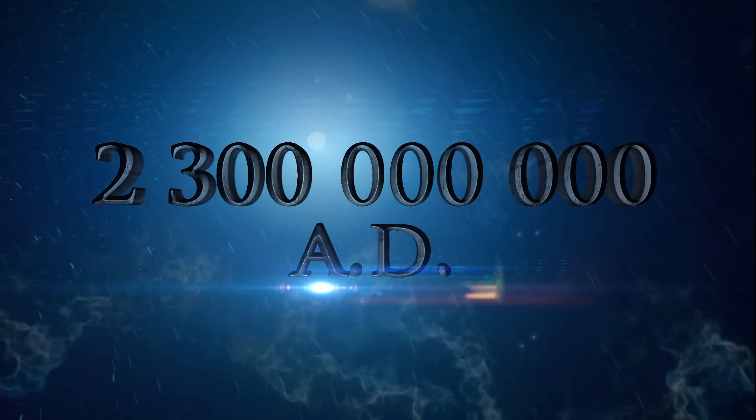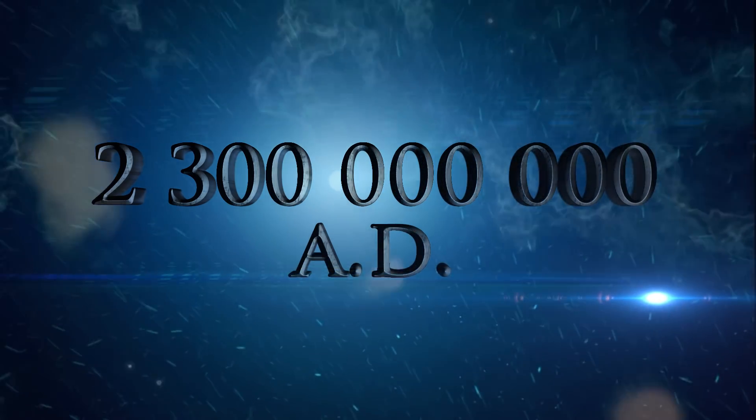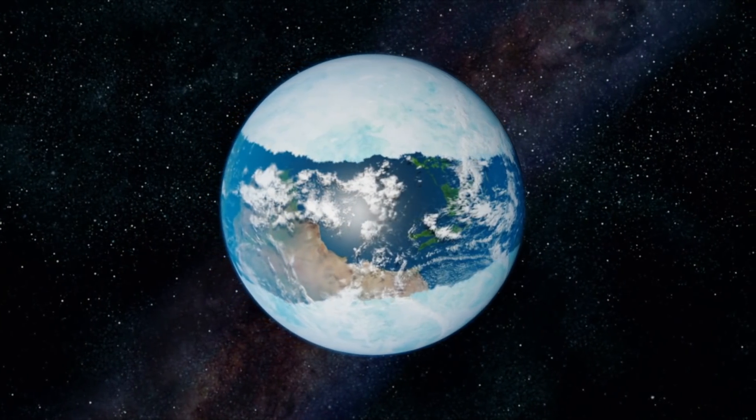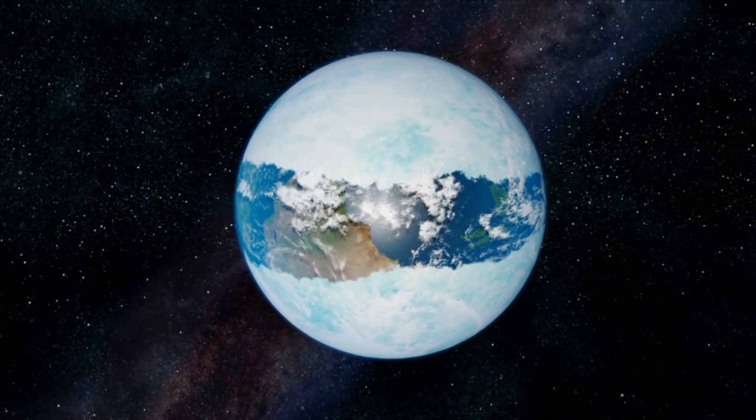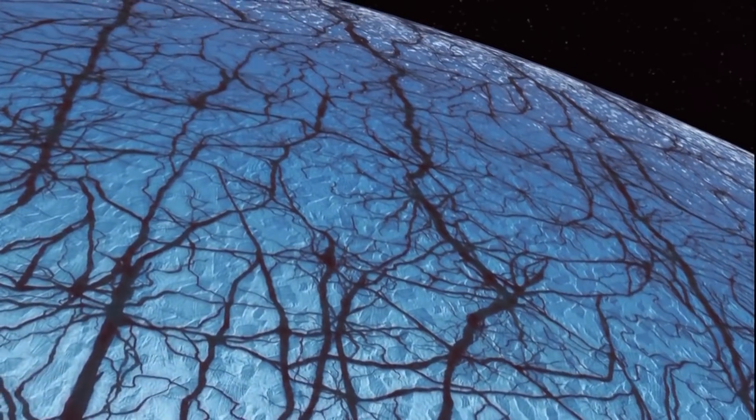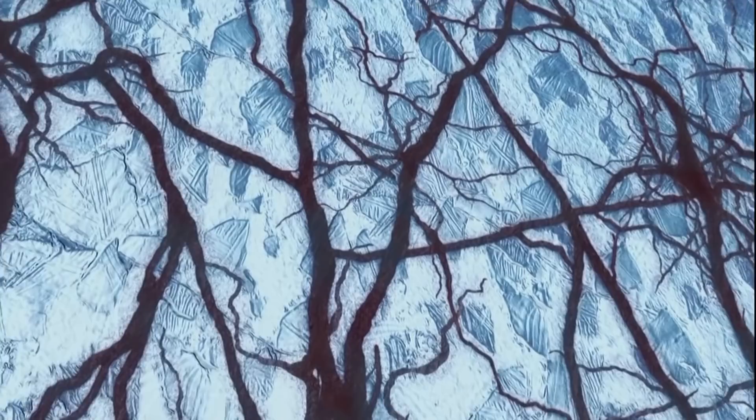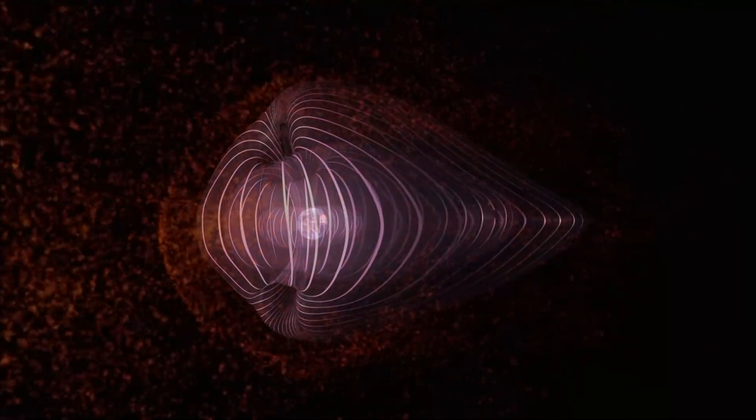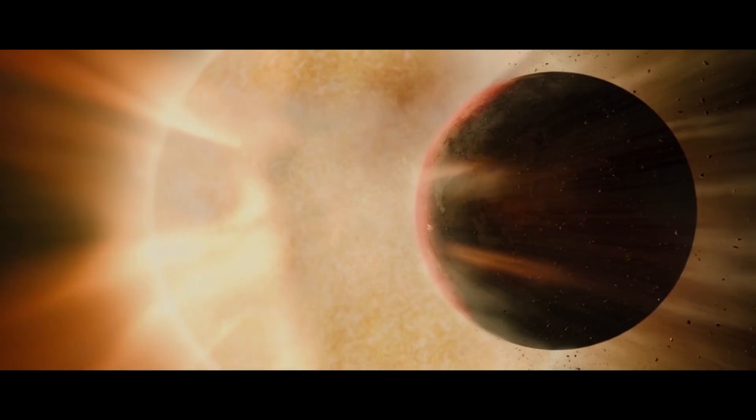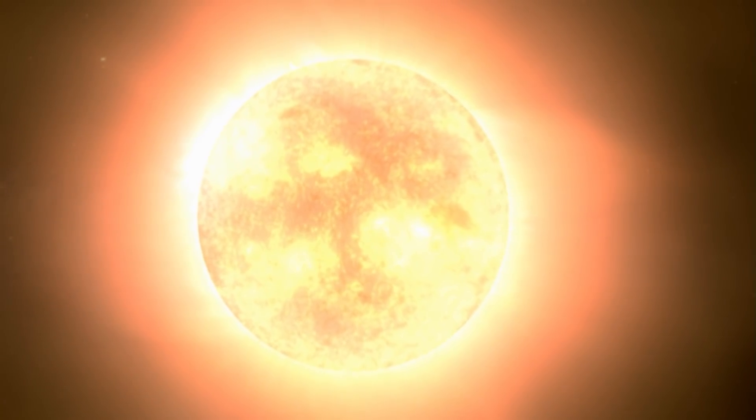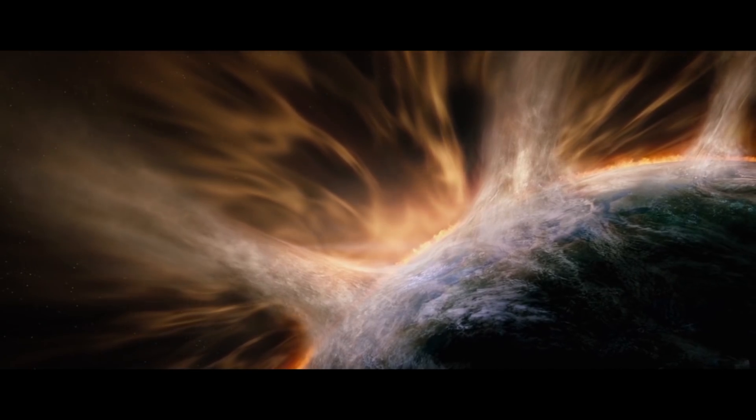Two point three billion years from now, the Earth's outer core freezes. If the inner core continues to grow at its current rate of one millimeter per year, without its liquid outer core, the Earth's magnetic field shuts down, and charged particles emanating from the Sun gradually deplete the atmosphere.